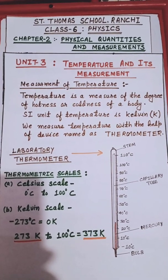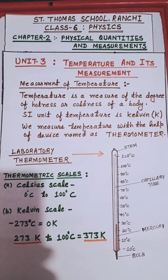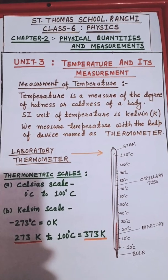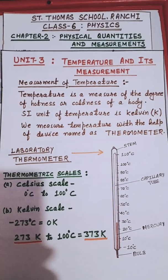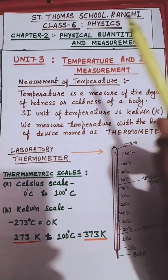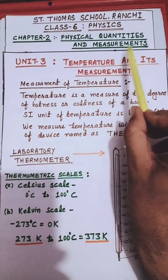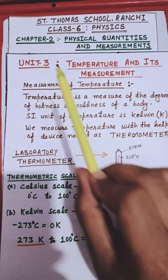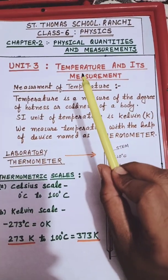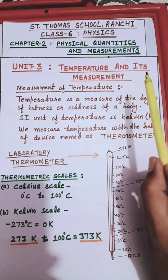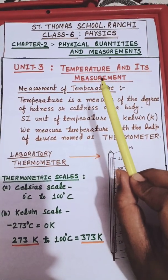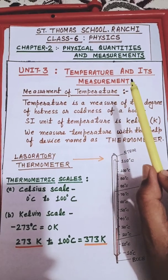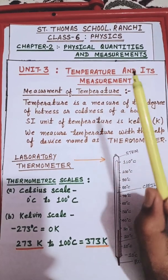Hi everyone. Here we are going to start with the third unit of chapter 2, Physical Quantities and Measurement. The third unit is Temperature and its Measurement. In this unit we are going to see how we measure temperature.